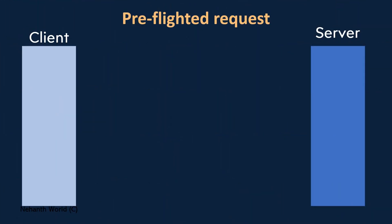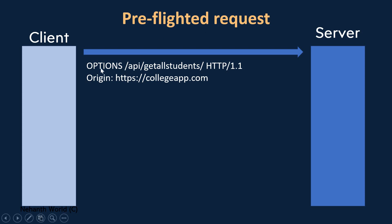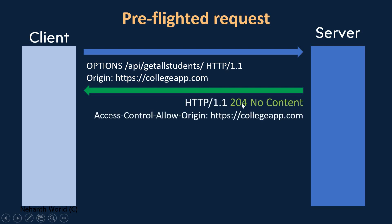The server is the Web API server and the client is the Angular application. The client sends a request, and you can see the method type is OPTIONS — not the actual method type. When you see a method of type OPTIONS, consider that a preflighted request. This is the origin. The server sends the response with status 204 — which is success but no content — and you can see the CORS header Access-Control-Allow-Origin with a domain name in the response.